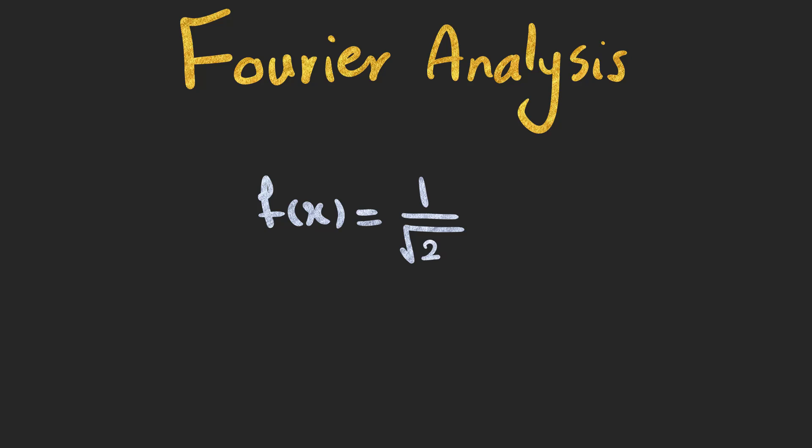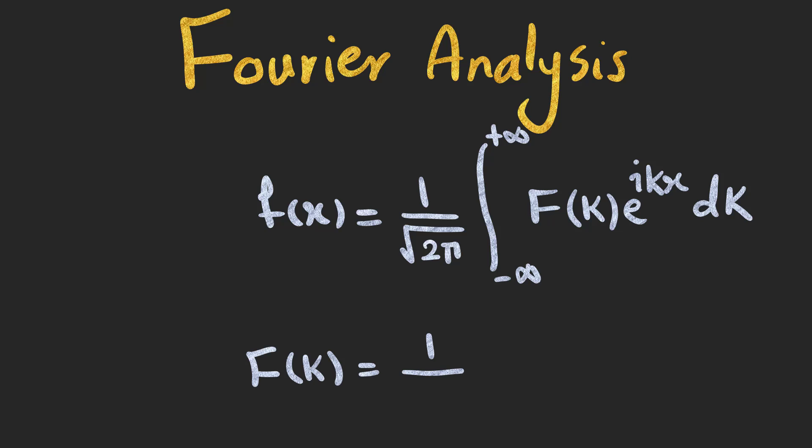f of x can be written as an integral of f of k multiplied by e to the power of ikx over all k's. And f of k can be written as an integral of f of x multiplied by e to the power of minus ikx over all x's.